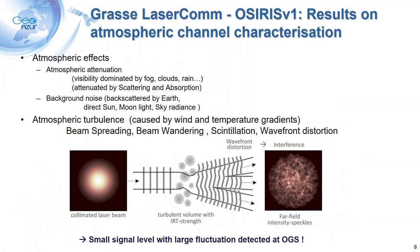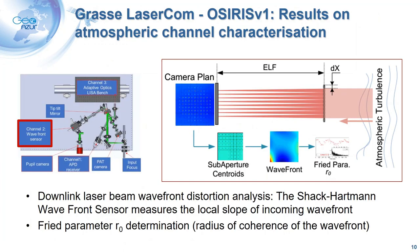We also performed atmospheric channel characterization. Beyond atmospheric attenuation and background noise, we looked at the effect of atmospheric turbulence caused by wind and temperature gradients, which generates beam spreading, beam wandering, scintillation, and wavefront distortion. For this, we used a Shack-Hartmann analyzer — a wavefront sensor — to measure the local slope of the incoming laser beam using an array of micro-lenses. From this, we can extract the radius of coherence of the turbulence and the Fried parameter.